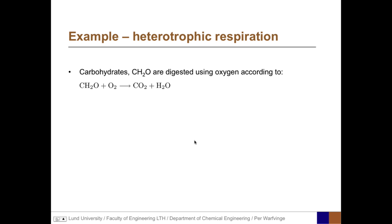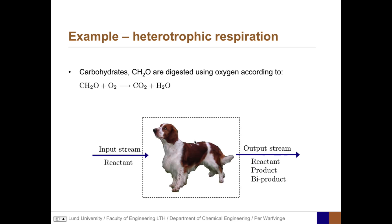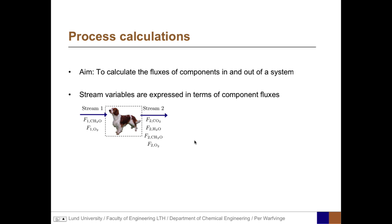In a system, carbohydrates, CH2O, are digested using oxygen according to the respiration reaction: CH2O plus O2 yields CO2 plus water, H2O. This could take place within an organism, with an input stream containing the reactants and an output stream with the products and possibly even byproducts. The aim of process calculations is to calculate the fluxes of components in and out of a system, and the stream variables are expressed in terms of component fluxes.